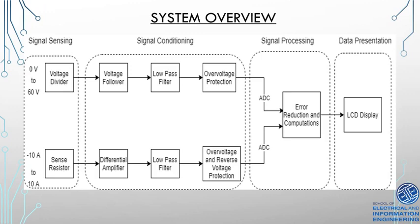The energy meter consists of signal sensing elements, signal conditioning circuitry, signal processing and data presentation. To measure current, a differential measurement is taken across a sense resistor using a differential amplifier. A low-pass filter is then used for noise cancellation.